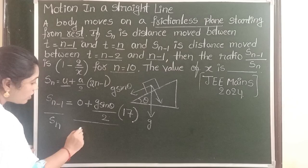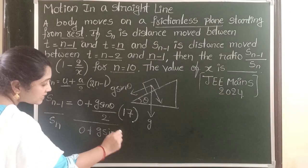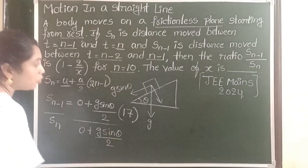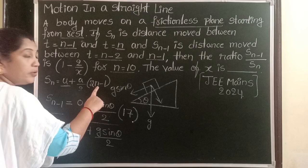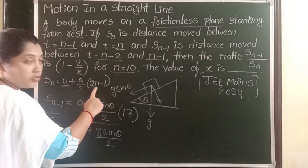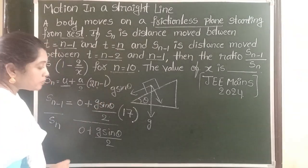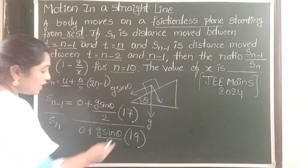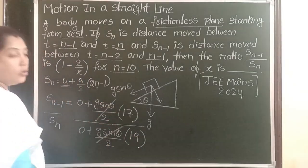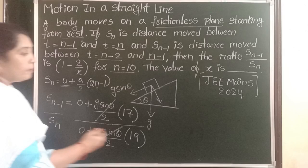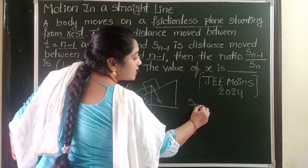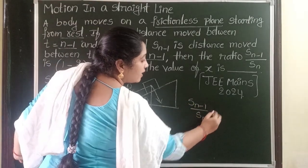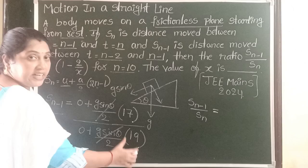For Sn, here also initial velocity is 0. Acceleration is G sine theta by 2 into n value 10. 2 into 10 is 20, 20 minus 1 becomes 19, so into 19. G sine theta by 2 gets cancelled. So Sn-1 by Sn equals 17 by 19.